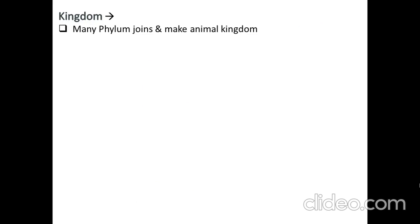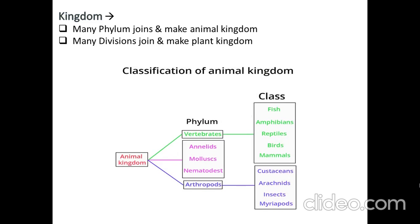Next is kingdom. For animals, many phyla join at the animal kingdom. For plants, many divisions join at the plant kingdom. For phylum Chordata, there are five different classes: fish, amphibians, reptiles, birds, and mammals. There are also many other phyla like Annelida, Mollusca, and Arthropoda, each with different classes, and all of these fall under the animal kingdom.